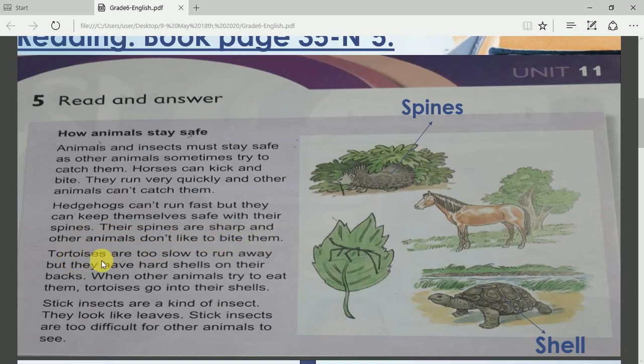Tortoises are too slow to run away, but they have hard shells on their backs. When other animals try to eat them, tortoises go into their shells.